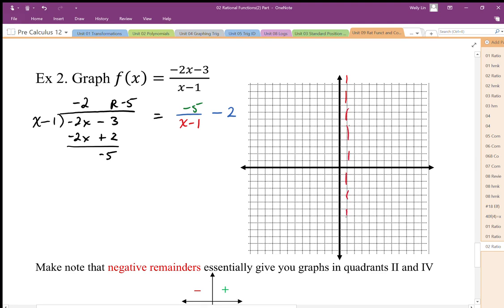I can see that I have a vertical shift of minus 2. So that means my horizontal asymptote is going to be here. So I have vertical asymptote at positive 1, horizontal asymptote at negative 2.